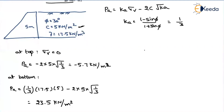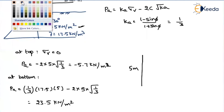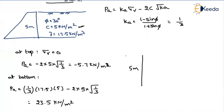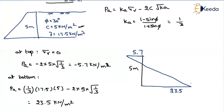Let us represent these two values in a pressure diagram. Drawing a vertical line of height 5 meters, at the top we have a pressure of minus 5.7, which is tensile in nature. At the bottom we have 23.5, which is compressive. We join these two points with an inclined line. The height of the tensile crack, represented as Ht, spans the region where there is negative earth pressure, from the top down to where the pressure is zero.